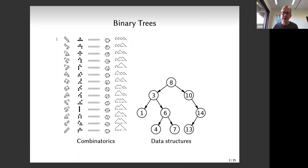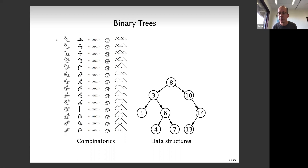Most of you have heard of binary trees, but depending on whether you're a combinatorist or a computer scientist, you may see them differently. In combinatorics, binary trees are a Catalan family, in bijection with parenthesis expressions, triangulations of a convex polygon, or Dyck paths. In computer science, you'd see them as a data structure for searching a set of n totally ordered elements by bisection - you look at the root, then go left or right depending on comparison.